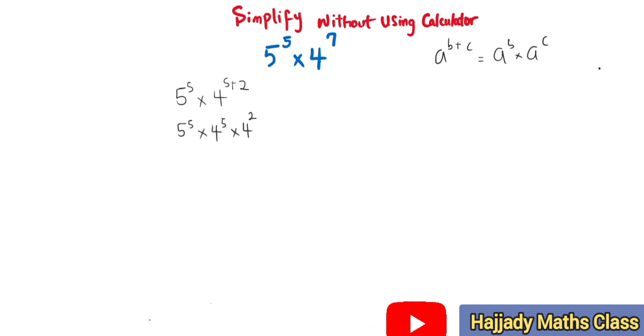So combining these two together, we have 5 multiplied by 4, raised to power 5. There's another rule of indices that says a raised to power c multiplied by b raised to power c is the same thing as a times b, raised to power c. That's what I applied here.